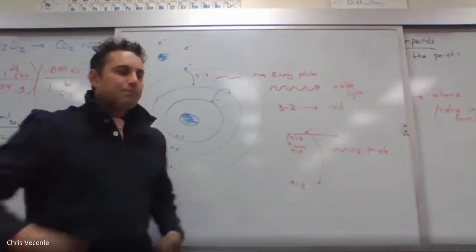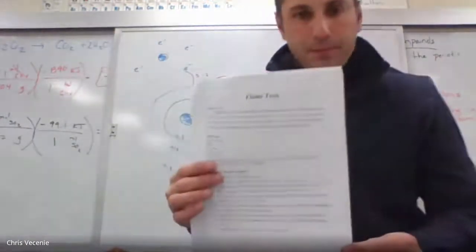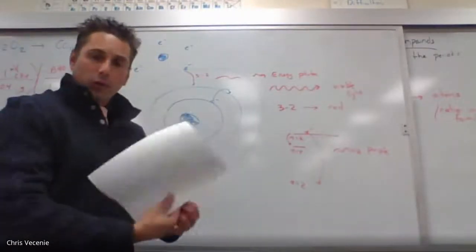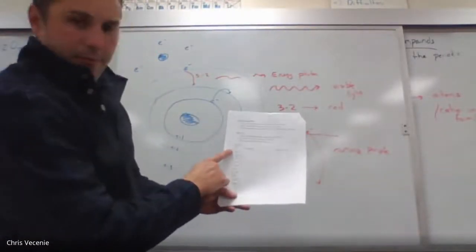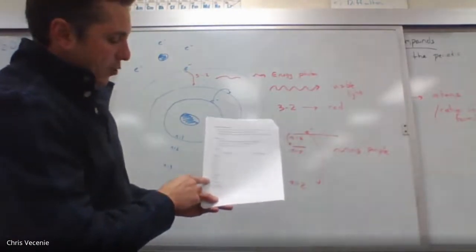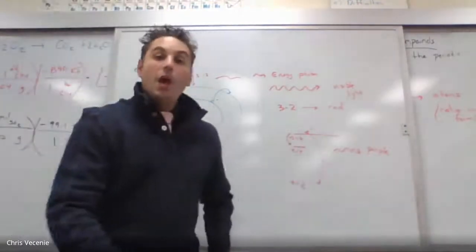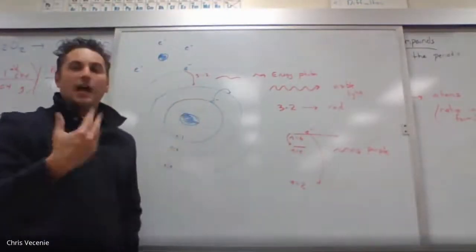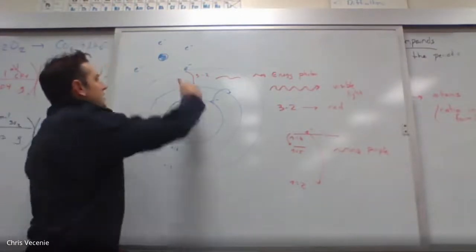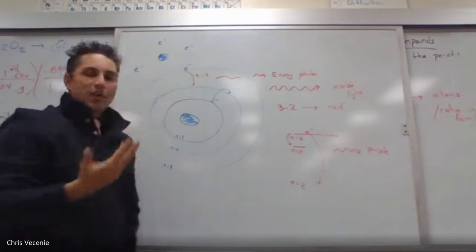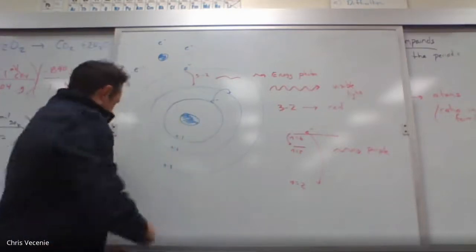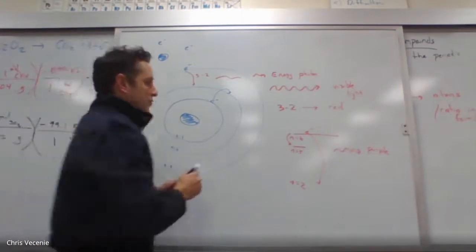So what we're going to do in this lab, which is the flame lab, is we are going to test a series of metal nitrates: barium, calcium, cobalt, copper, lithium, lead, magnesium, nickel, potassium, and strontium. What we're going to do is we're going to excite their electrons up to a higher level. We're going to do that by heating them. We're going to put them into a flame. Once the electrons are up there, they aren't stable enough to stay there. So they are going to return back down to their lowest energy state.